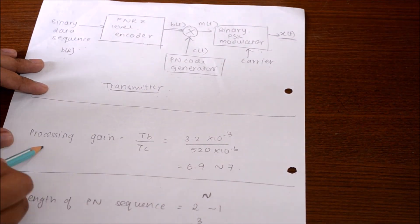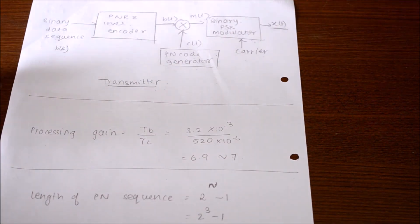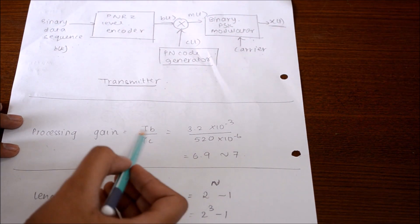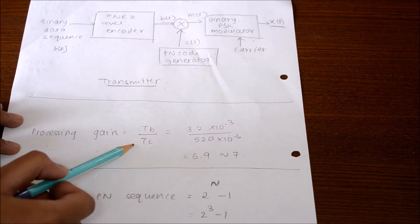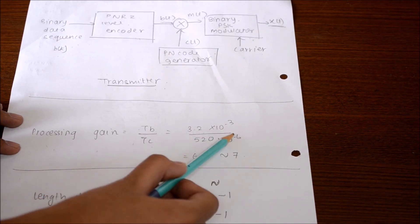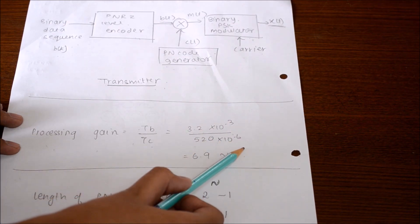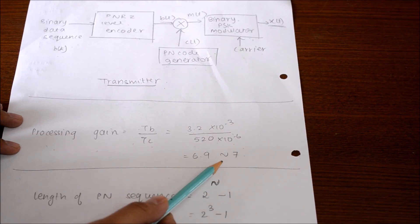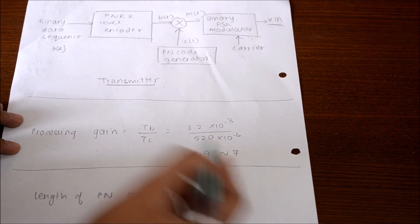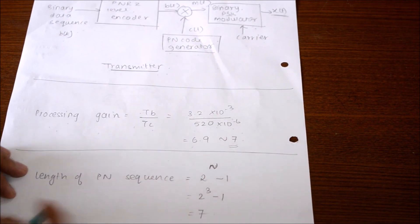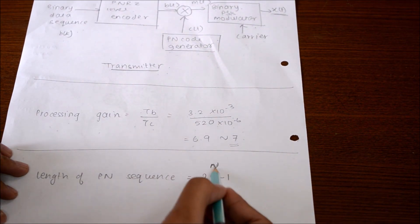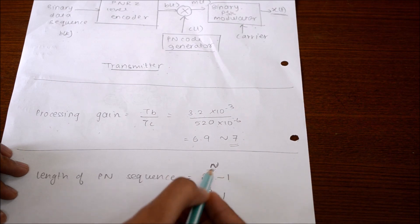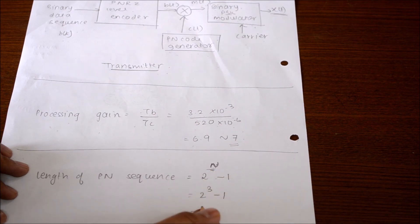Now we will calculate the processing gain. The processing gain is equal to TB divided by TC. We measured TB as 3.2 ms and TC as 520 microseconds, giving a processing gain of 7. The length of the PN sequence is calculated by the formula 2 raised to N minus 1, where N is the number of bits of the PN sequence. So 2 raised to 3 minus 1 equals 7.